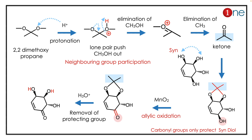The important stereochemical point: the two hydroxy groups forming the acetal should be cis to each other. Then you are protecting that group. Further, reacting with manganese dioxide — manganese dioxide undergoes allylic oxidation — you have an allylic ketone as the final step.